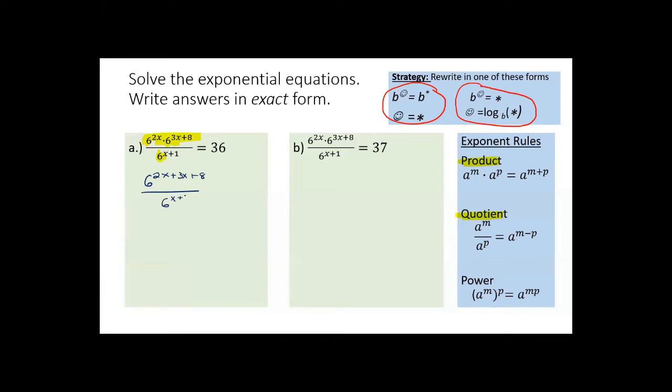I'll still divide by 6 to the x plus 1 and write the 36 on the other side. Now I use the quotient rule to obtain 6 to the 2x plus 3x is 5x plus 8. I'm going to subtract my exponents. So I have minus x plus 1 in parentheses so that I remember to subtract. And finally, combining things, 5x minus x is 4x and 8 minus 1 is 7.